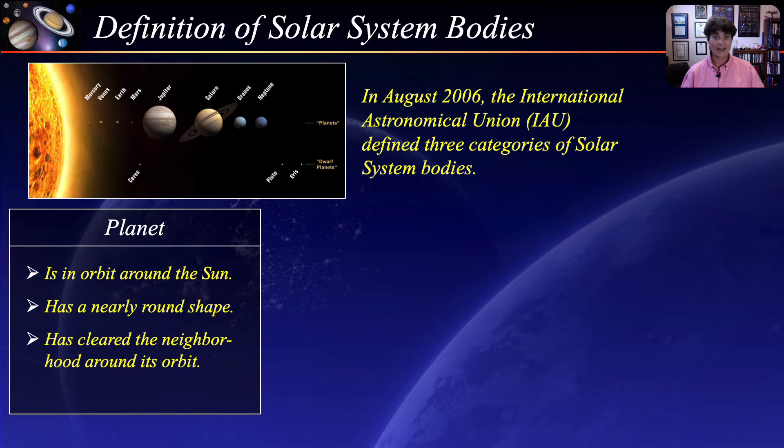In other words, it has become the gravitationally dominant object in its orbit. The eight planets, of course, are Mercury, Venus, Earth, Mars, Jupiter, Saturn, Uranus, and Neptune.